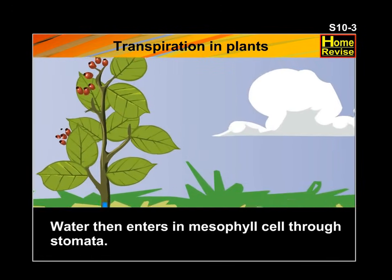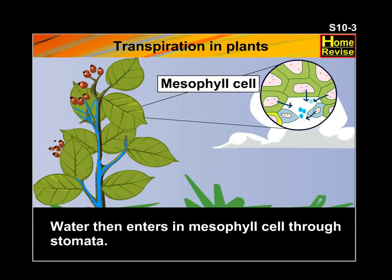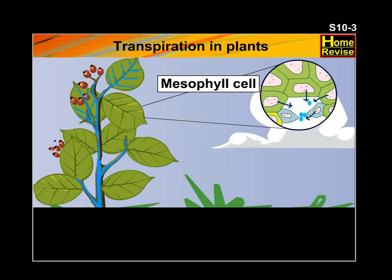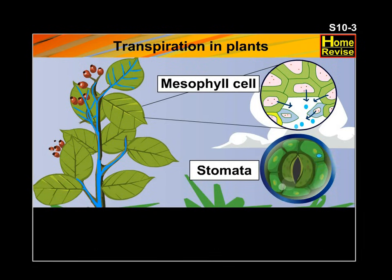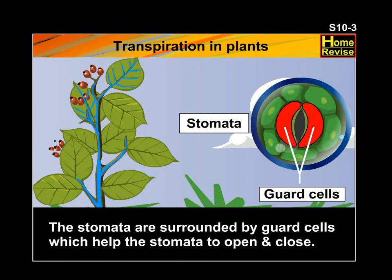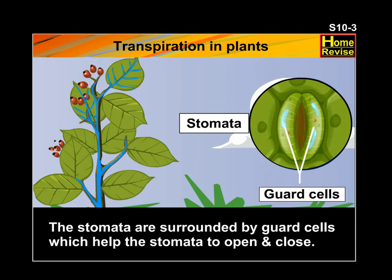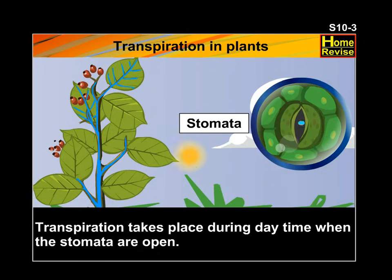Water then enters the mesophyll cells through stomata. Stomata are openings on the leaf surface through which transpiration takes place. The stomata are surrounded by guard cells which help the stomata to open and close. Transpiration takes place during daytime when the stomata are open.